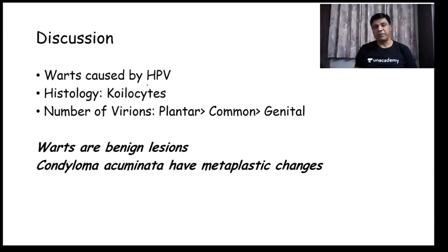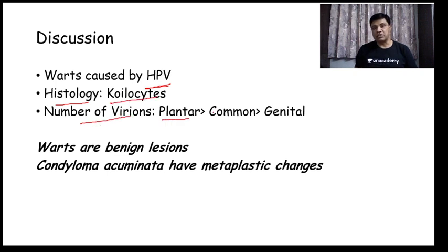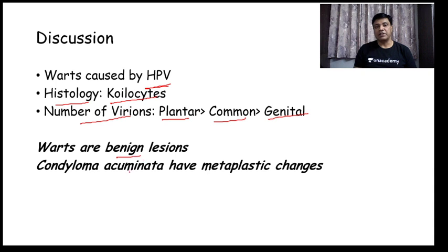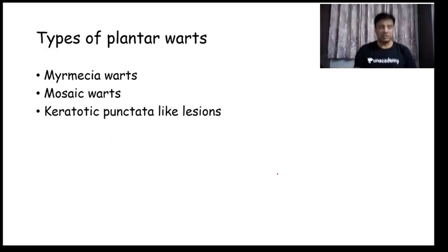Warts are caused by human papillomavirus. Histologically they are characterized by koilocytes. The number of virions is more in plantar warts than in common warts and in genital warts — plantar warts have the maximum number of virus particles. It is called a wart when lesions are benign, and condyloma acuminata when there are metaplastic changes. Types of plantar warts include myrmecia warts, mosaic warts, and keratotic punctate-like lesions.